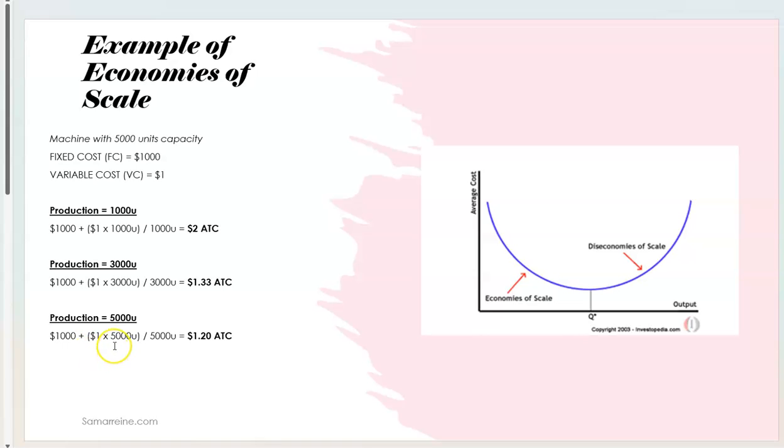When they produce 5000 units now their average total cost is a dollar 20. It's 1000 in fixed that doesn't go away and then you have the one dollar times 5000 which is the five thousand dollars in variable. So it's six thousand divided by five thousand and that makes it a dollar and 20 cents. Basically what's happening here is the fixed cost is a lot lower and the variable cost is what's taking over. So basically the average total cost is a dollar and 20 cents. What we're seeing here is that as this company produces more they're able to lower the average total cost.